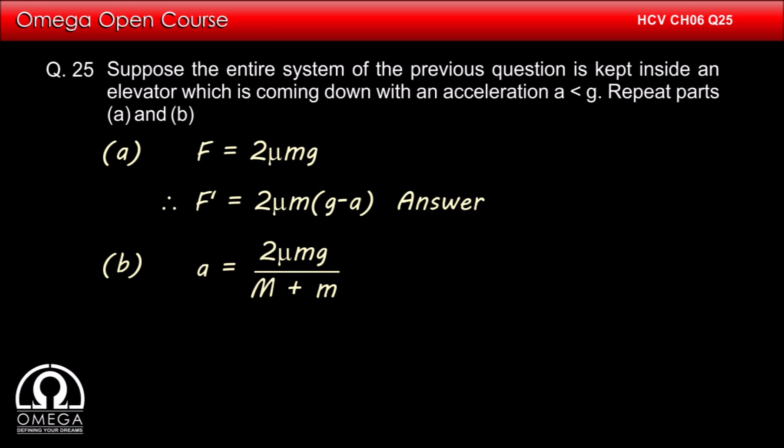From solution of question number 24, we have acceleration is equal to 2μmg divided by capital M plus m. In this case too, we can get the value of acceleration by simply replacing g by g minus a. Therefore, the acceleration of the blocks in the elevator is 2μm(g-a) divided by capital M plus m. This is answer to part B of the question.